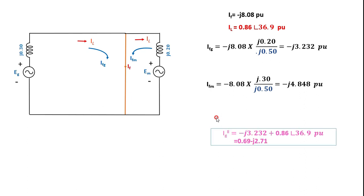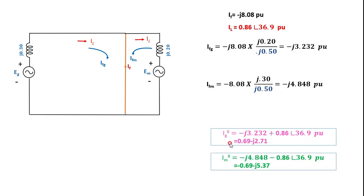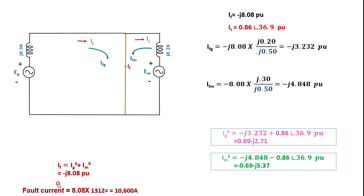Superimposing IL with IFG gives the total subtransient current from the generator IG''. For the motor, the subtransient current IM'' equals IFM minus IL, because IL flows in the opposite direction to IFM, giving -0.69 - j5.37 per unit. Verifying by adding IG'' and IM'', we again obtain -j8.08 per unit, confirming the total fault current remains 10,600 amperes.